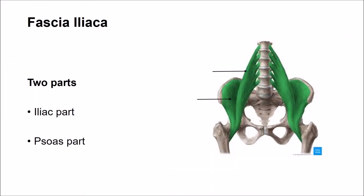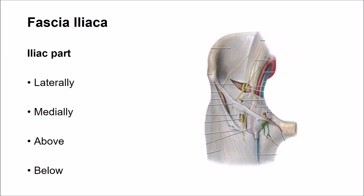The fascia iliaca is a strong sheet of fascia which covers the iliacus on the lateral side and the psoas major muscle on the medial side. The psoas part covers only the psoas major muscle above the iliac crest. The iliac part is attached laterally on the inner lip of the ventral segment of the iliac crest. Along the ventral segment of the iliac crest, the fascia iliaca blends with the fascia transversalis of the anterior abdominal wall. Medially, this fascia is attached to the ala of sacrum and pelvic brim up to the iliopubic eminence. Above, it continues with the psoas part of the fascia iliaca.